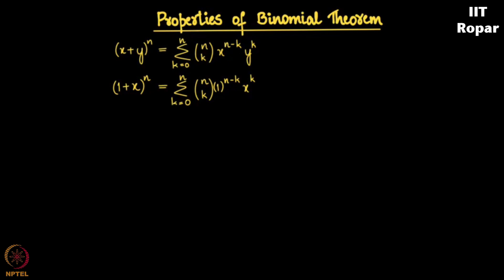So this happens to be summation k from 0 to n, n choose k into x to the k, because the rest of the terms here is 1 and hence we have n choose k into x to the k. So whenever we have something like 1 plus x whole square or 1 plus x whole cube or any n for that matter, you need not basically expand everything. You can directly write it as n choose k into x to the k.